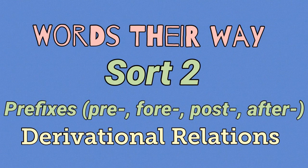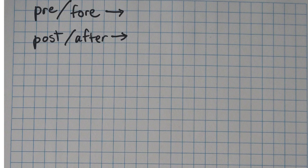All right, so we're going to get into a new sort here, Sort 2 of the blue book for derivational relations Words Their Way. In this video we'll tell you about the meanings of these prefixes and some of the words in this sort. So let's get into it. We have basically opposite prefixes with the same meanings for two.